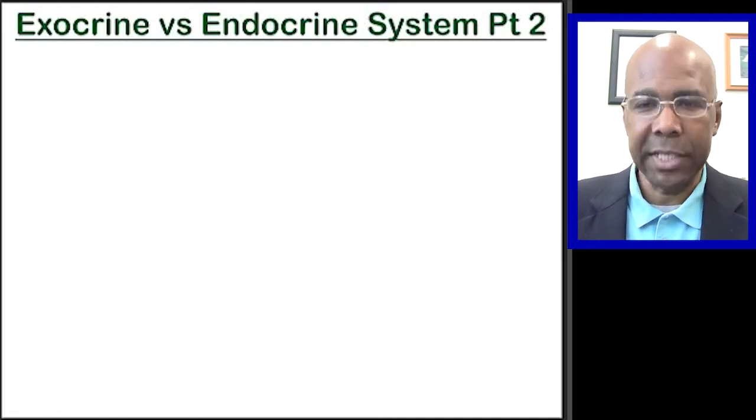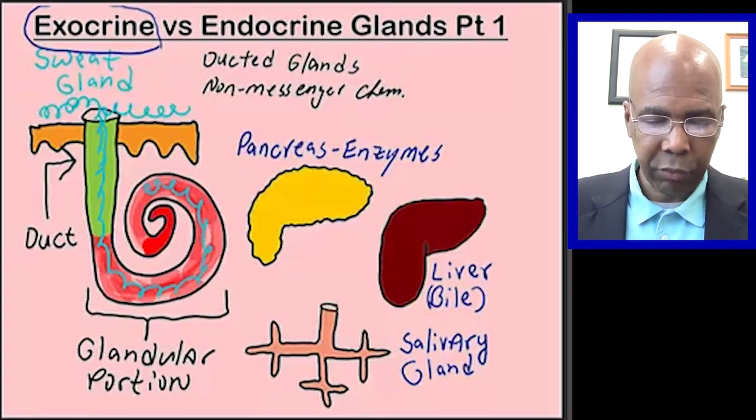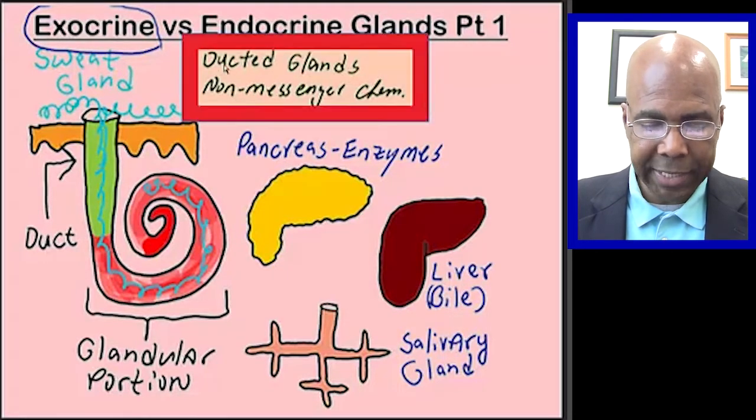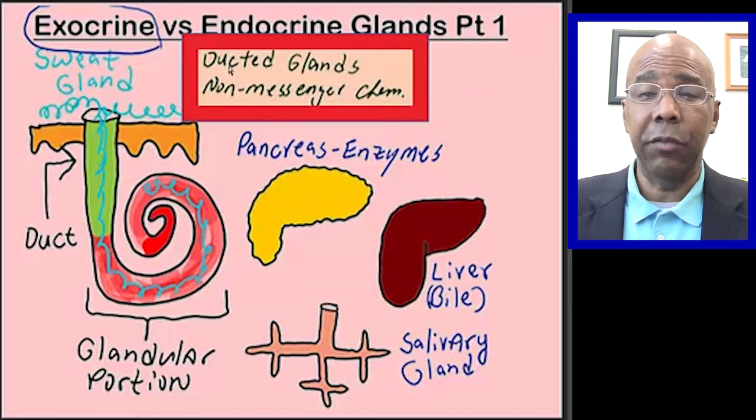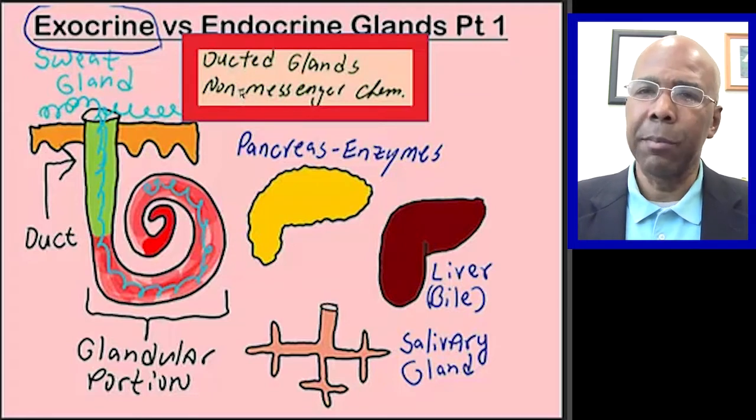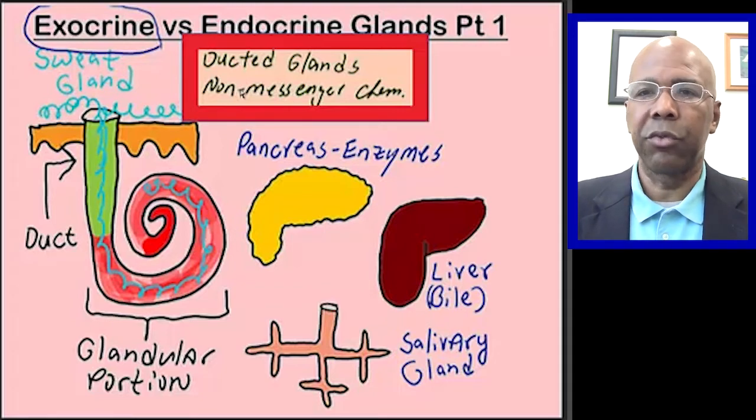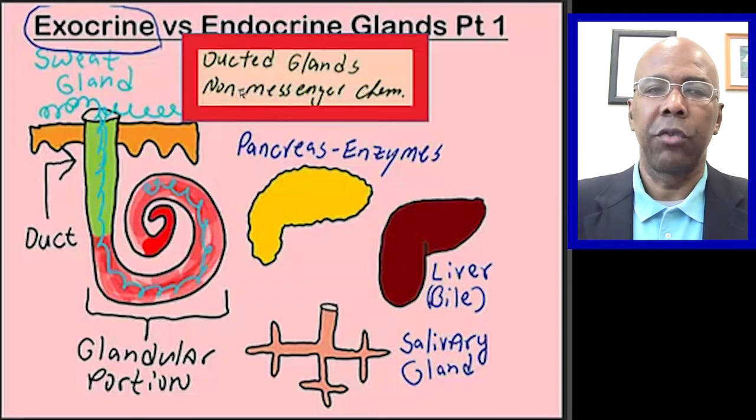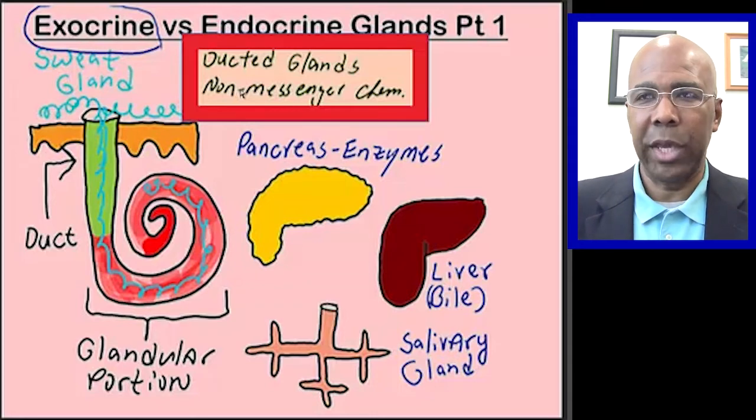So let's look back at our previous lecture. This is what we did before, the exocrine versus the endocrine glands. Our take-home message here is that the glands themselves are ducted, and the chemicals that are secreted by the exocrine glands are non-messenger chemicals. They don't send a chemical from the exocrine cell to a target cell. When the chemicals are secreted, they just do their job in that location.